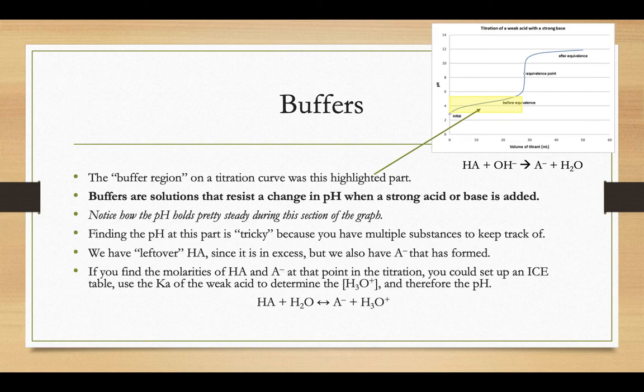If you have enough information there, you could find the molarities of the HA and the A minus, set up an ICE table, use the Ka value of that HA reacting with water, and that will allow you to find the H3O plus concentration and therefore the pH.